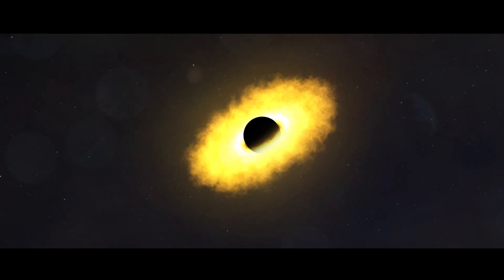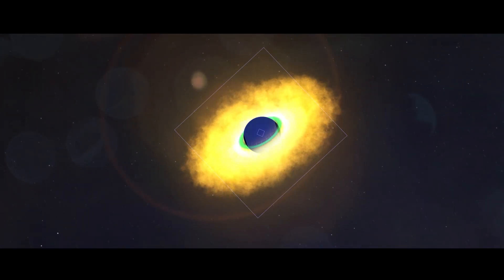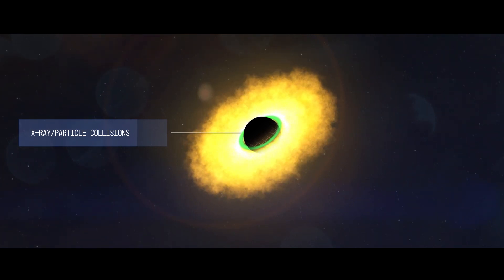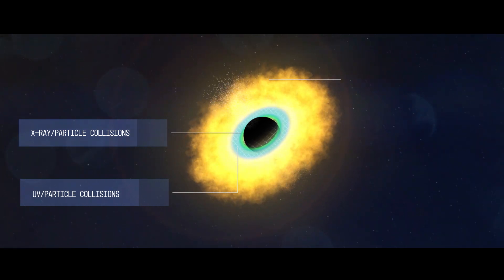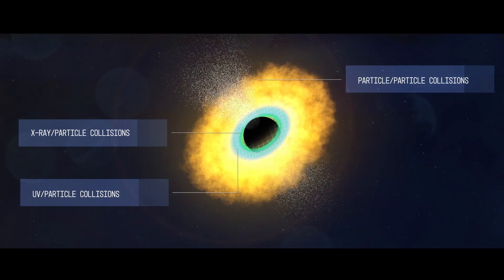Astronomers think the neutrino may have come from one of three regions: in the disk close to the black hole, where particles colliding with X-rays could produce neutrinos; further out in the disk, where particles could interact with UV light; or in broad outflows, where particles could collide with each other.